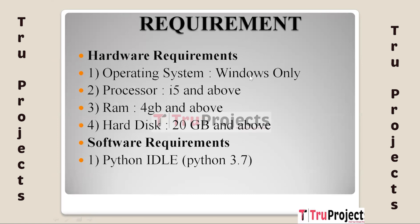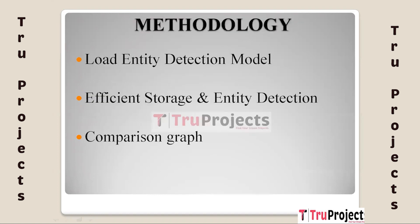The project requirements are divided into hardware and software requirements. For hardware: operating system Windows only, processor i5 and above, RAM 4GB and above, hard disk 20GB and above. For software requirements: Python, ideally version 3.7.